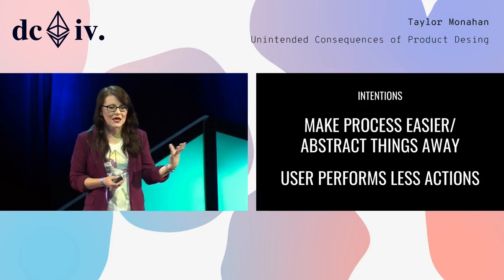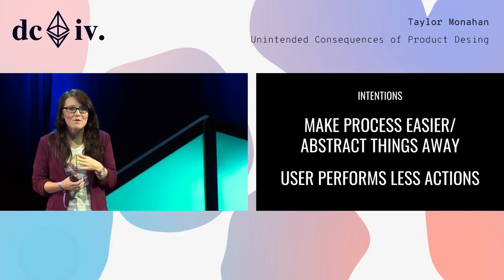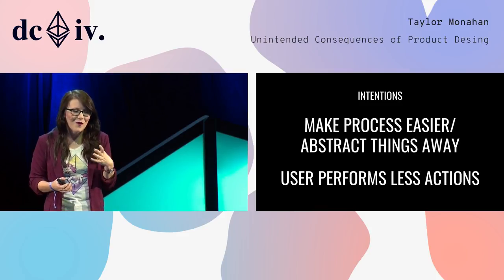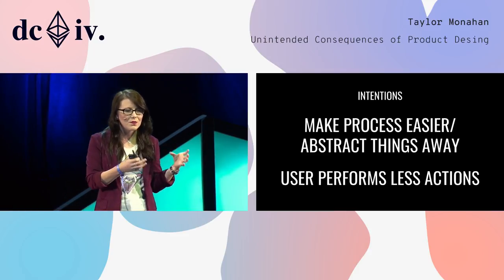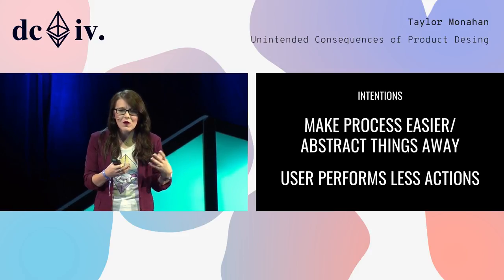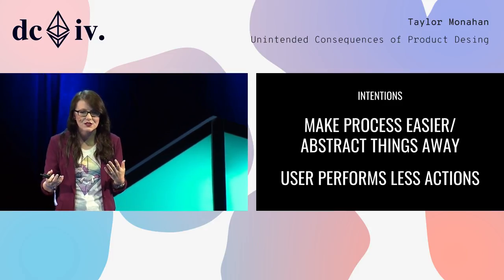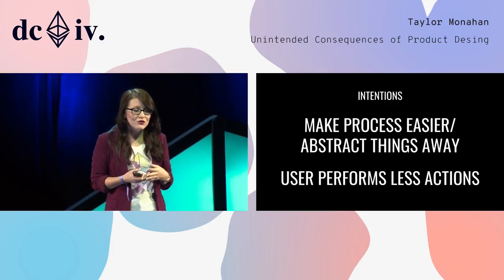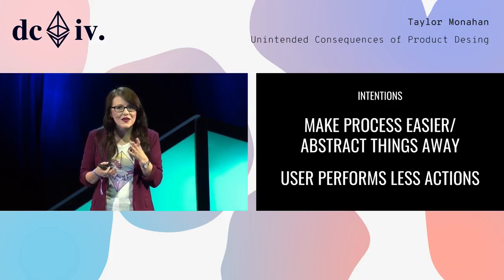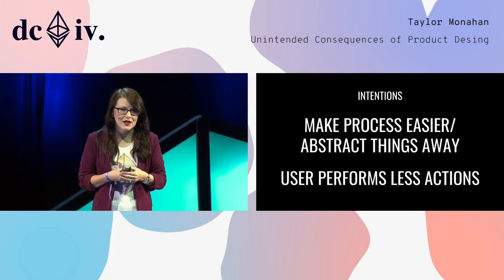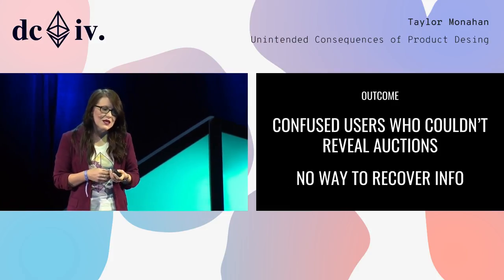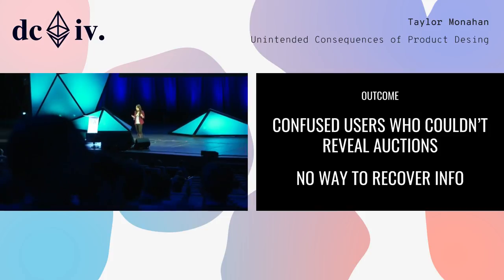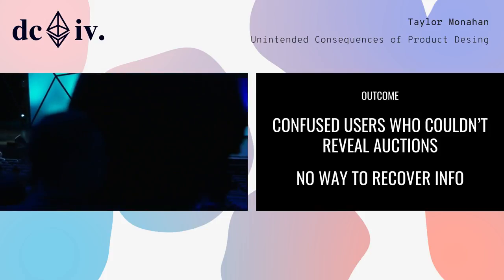We know the intentions of this app and many dApps: we want to abstract complicated interactions away from the user, have the user perform fewer actions, because at the end of the day the user just wants to bid on a name or reveal a name — they don't want to understand the inner workings, they don't want to know how the sausage is made. Unfortunately in this case it resulted in confused users who couldn't reveal their auctions, and there was simply no way to recover the information. That's a real shame.